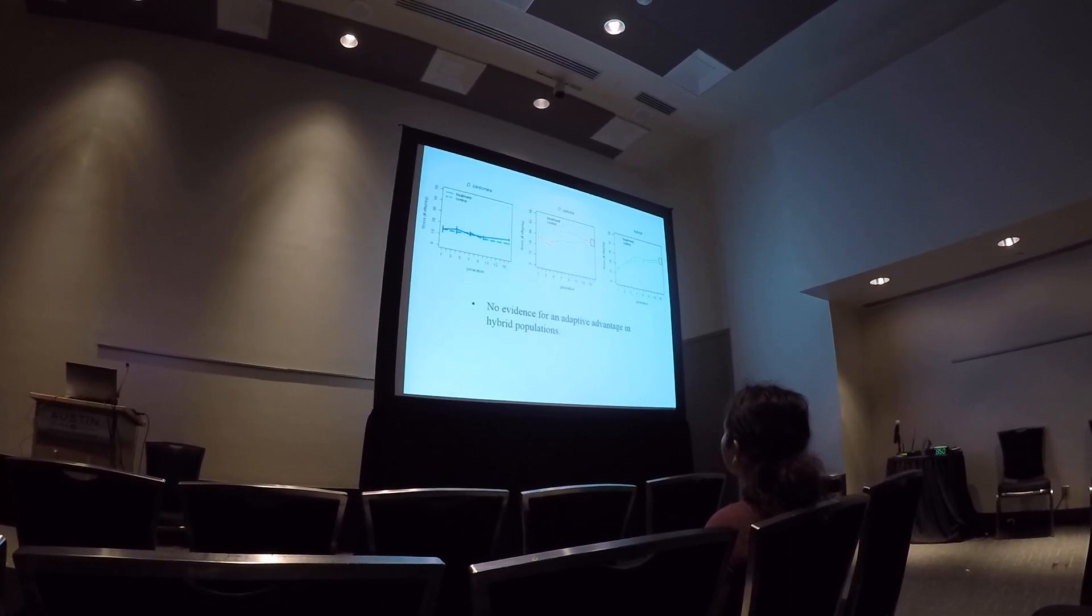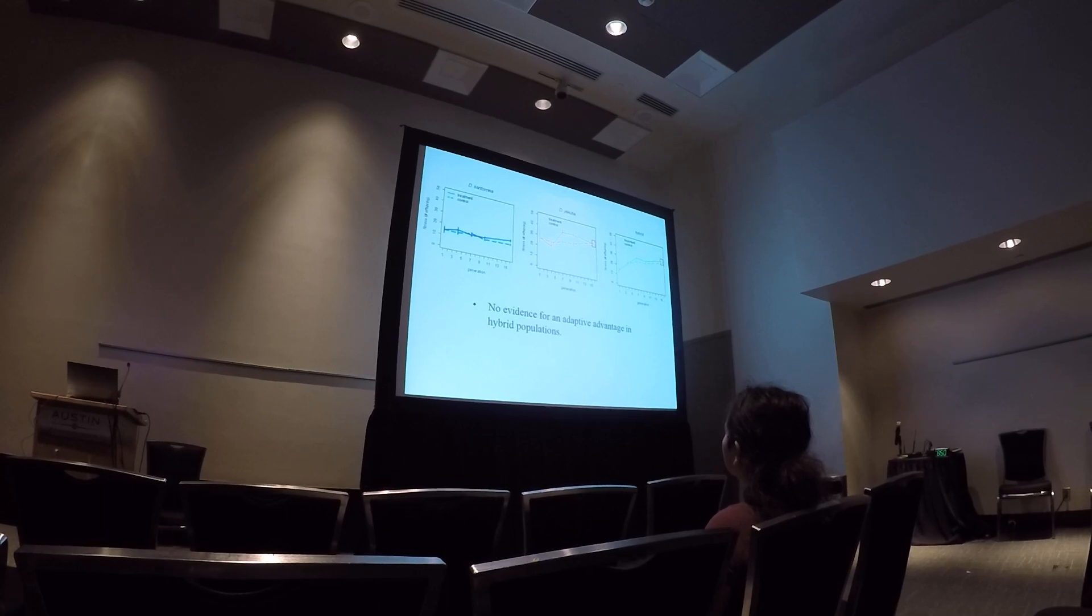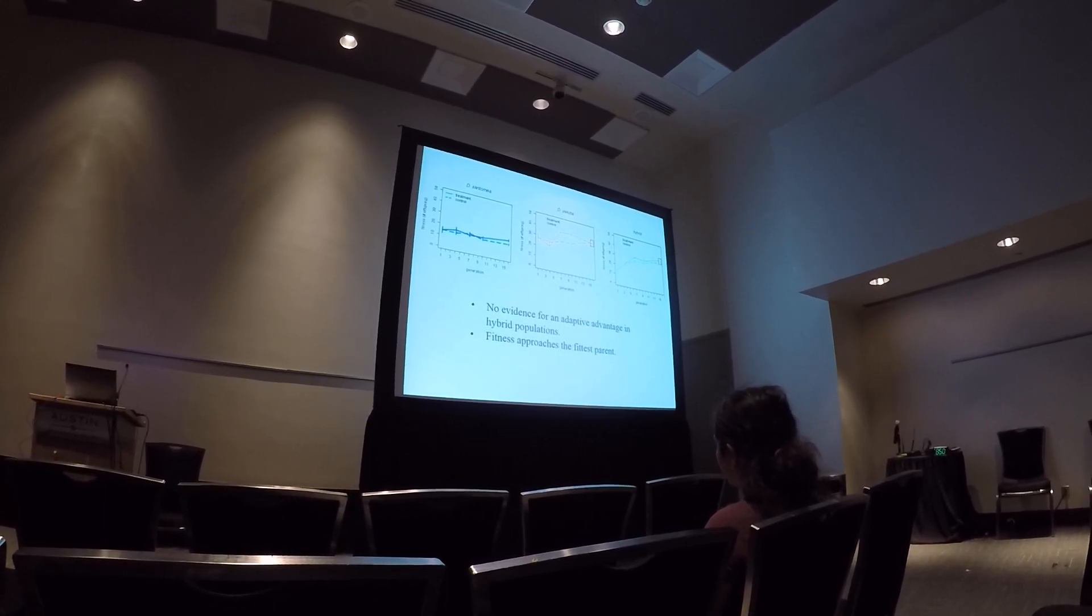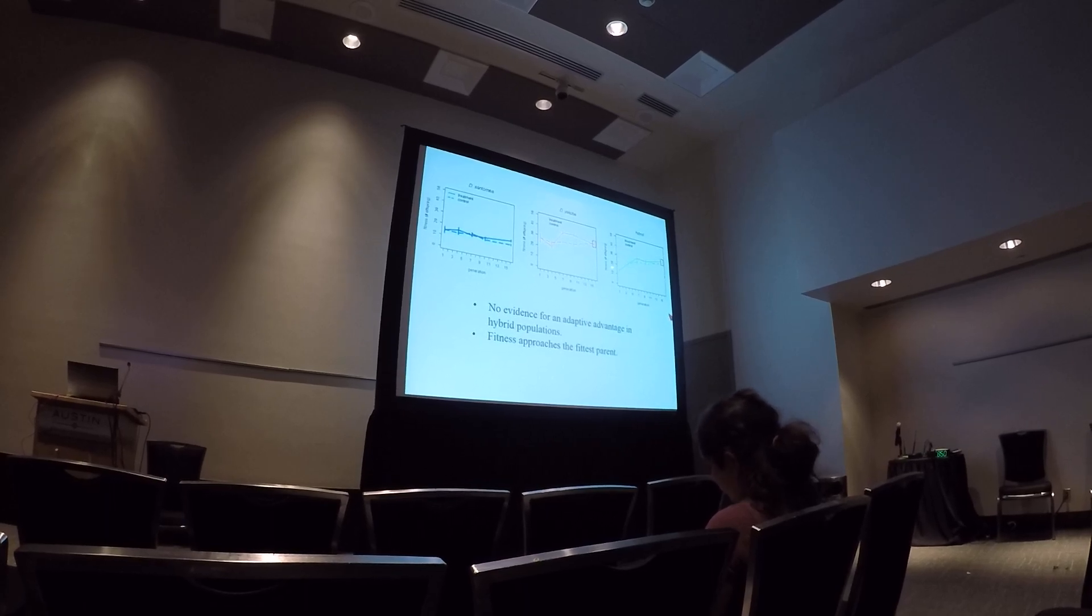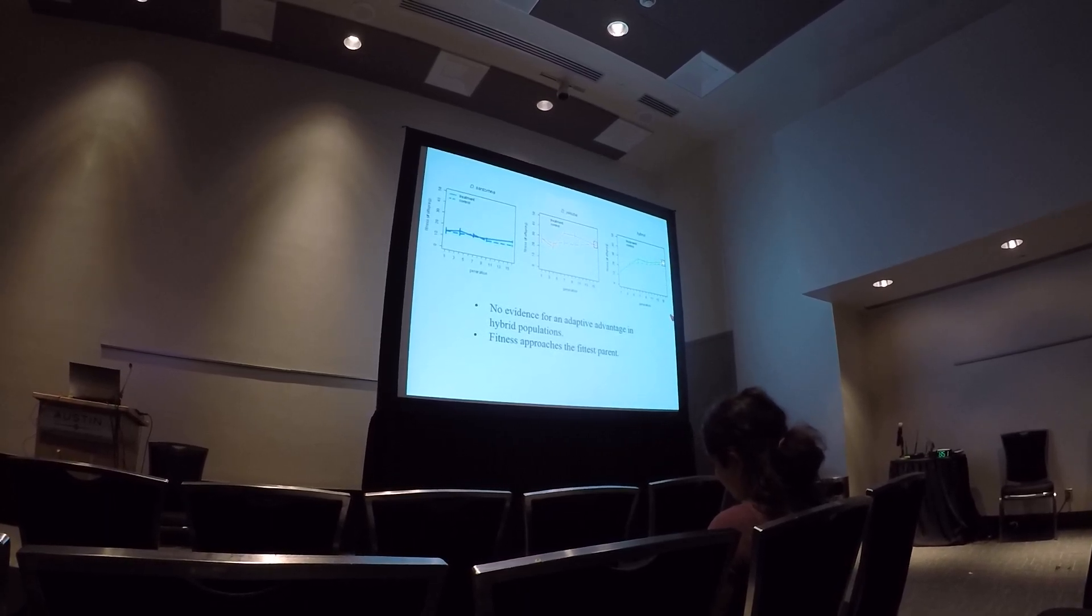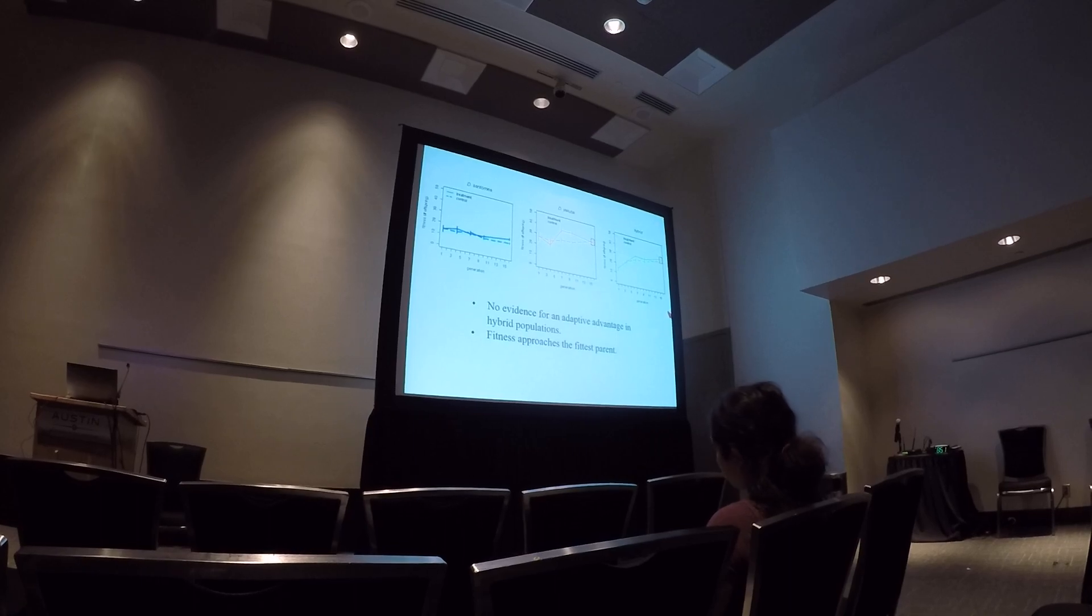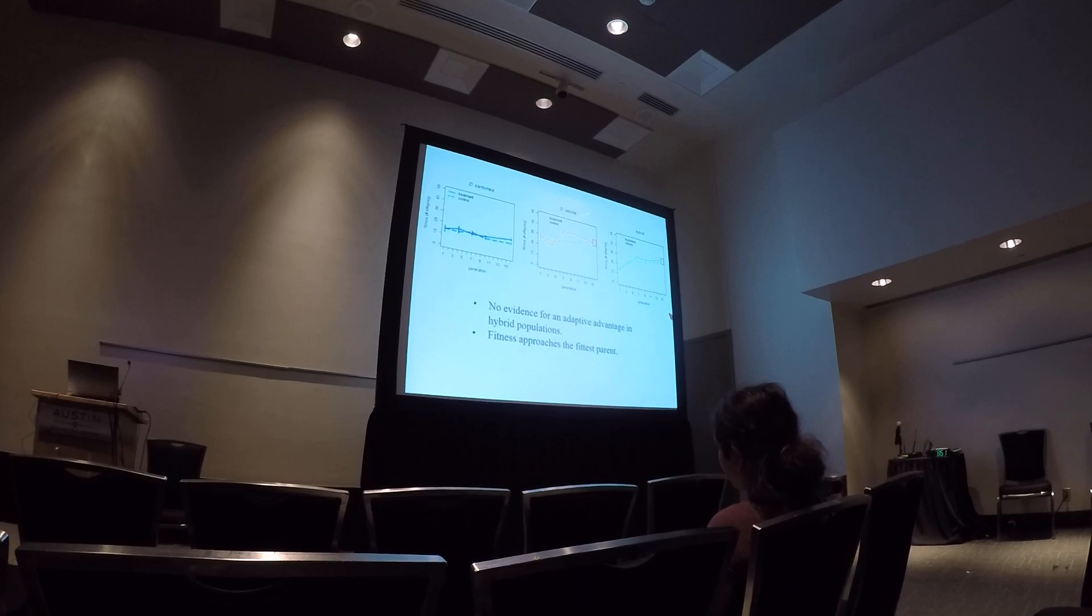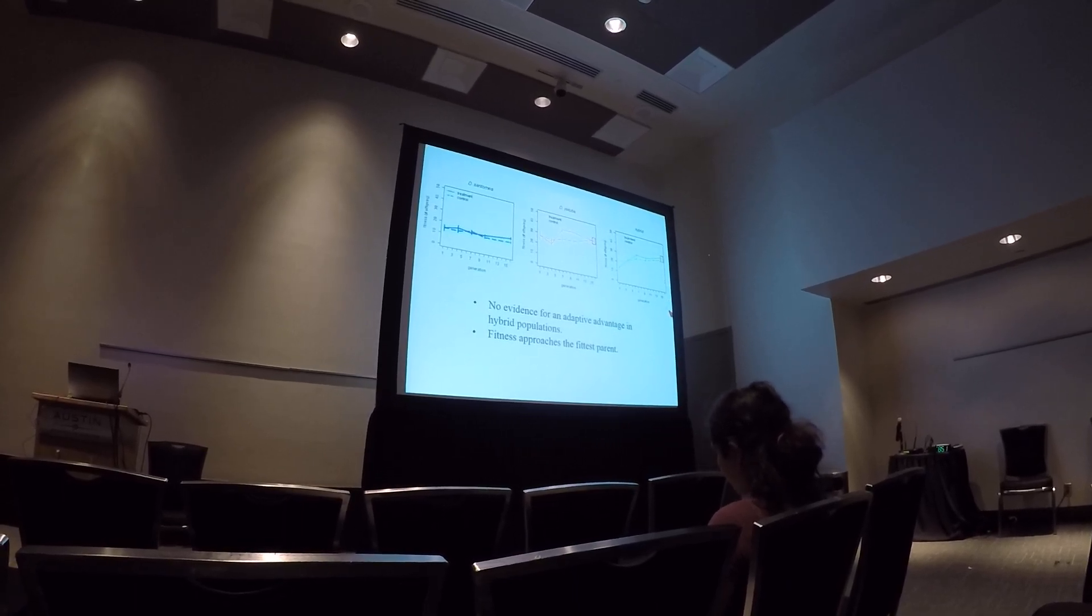And the same is true for the hybrids. An interesting result though is that in the hybrids, so again no evidence for an adaptive advantage in the hybrid populations, but what we see is that the hybrids' fitness is steadily increasing across the experiment. And what it looks like is happening is their fitness is just kind of converging on the most fit parent. So they're becoming, in terms of their fitness at least, more Drosophila yakuba-like, so they match up here.